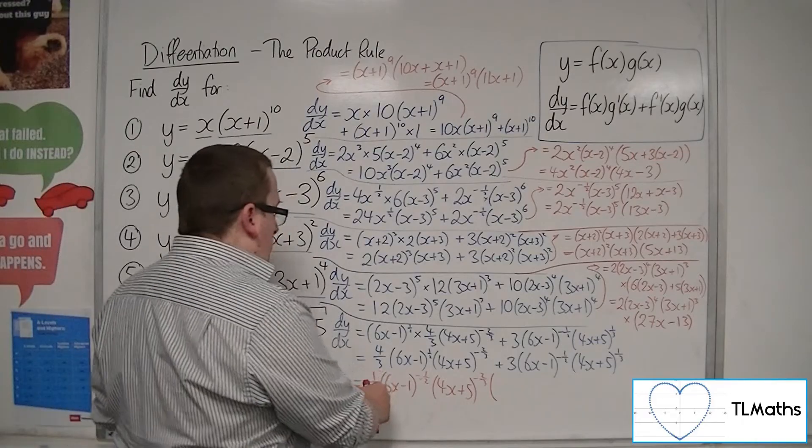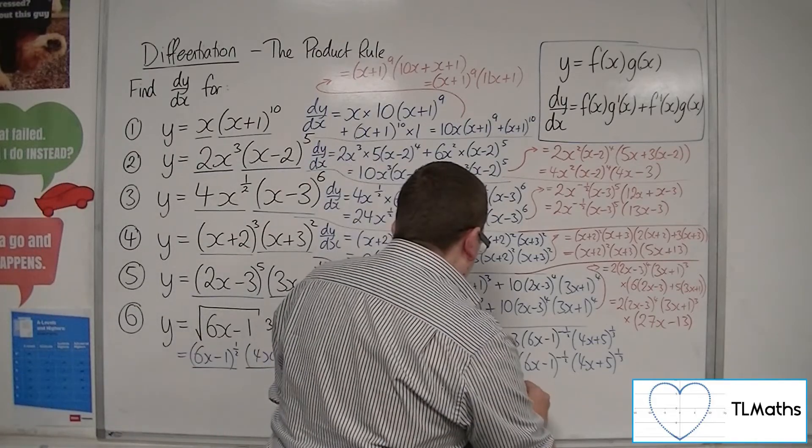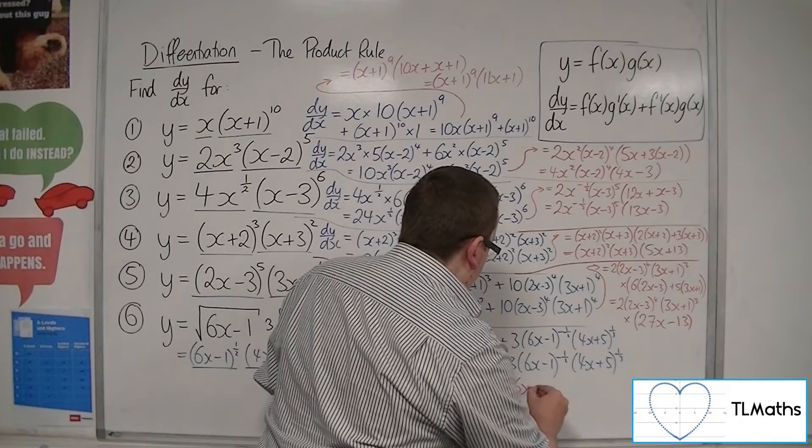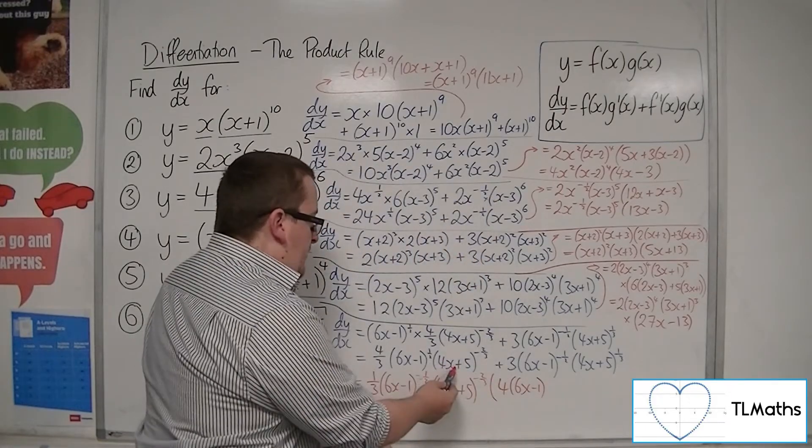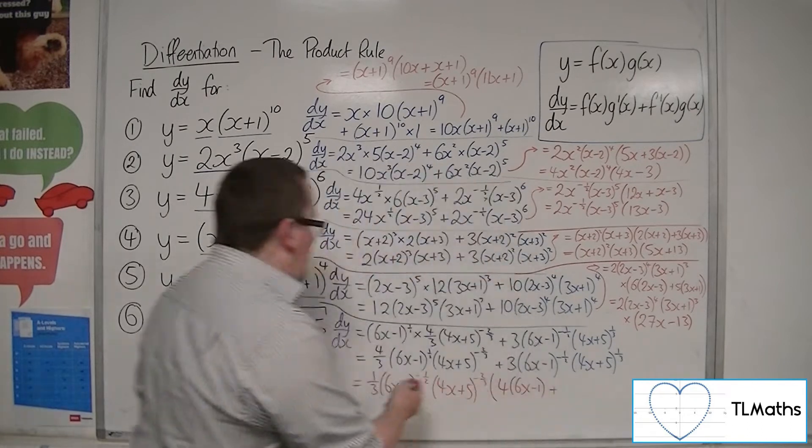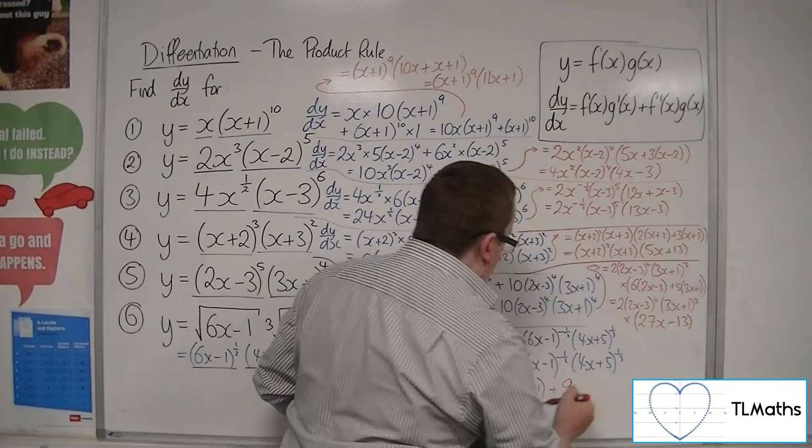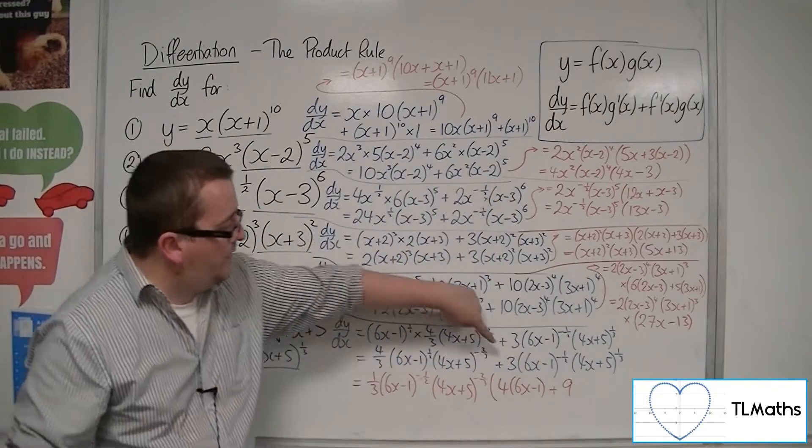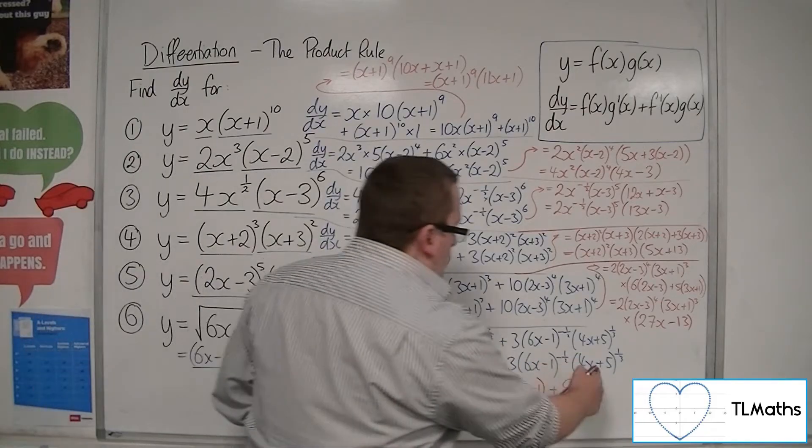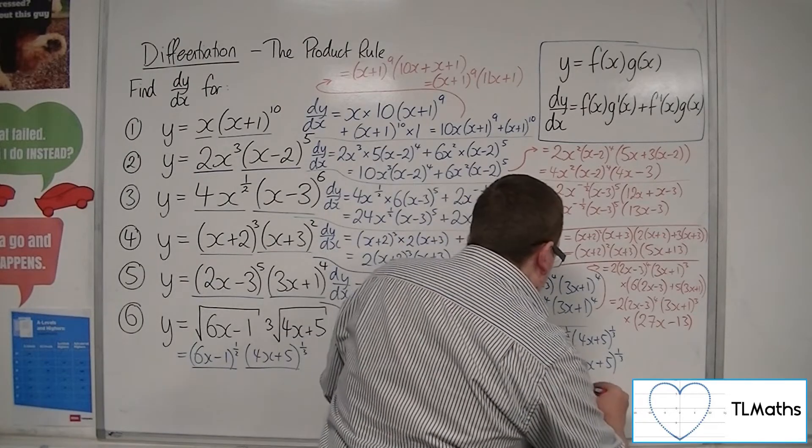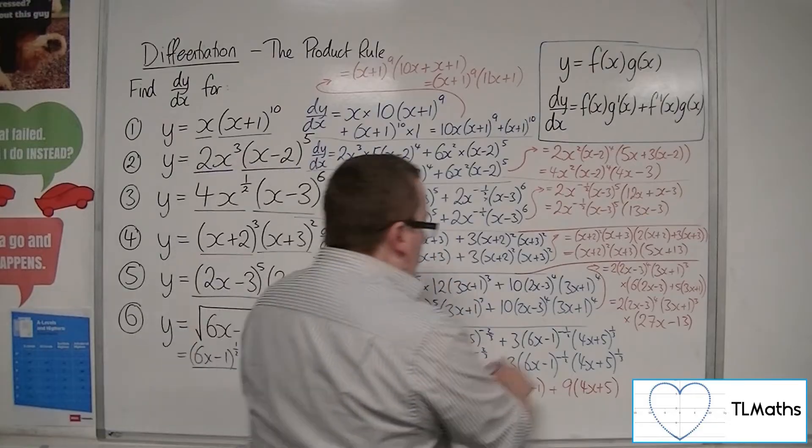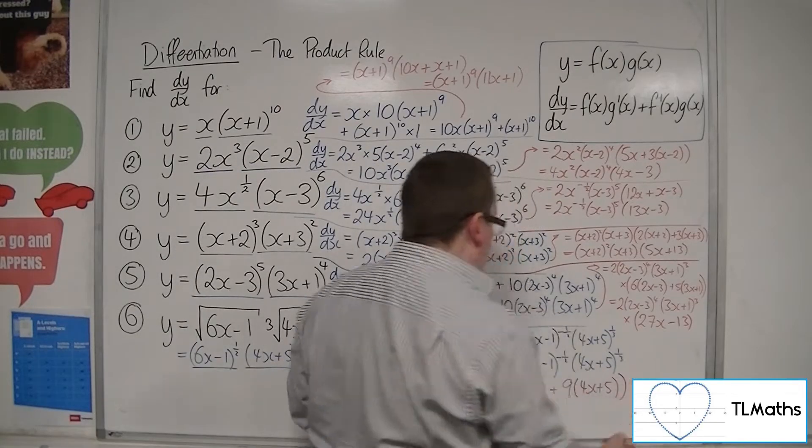What does that leave me with? Well, 1/3 times 4, I'm going to have (6x-1) from that. And I've dealt with that one, so I've got 4 lots of (6x-1) plus, now as I've pulled a third out, I'm going to have to have 9 here, because 1/3 times 9 will make the 3. The (6x-1)^(-1/2) is done with. Now the (4x+5), how many of those am I going to need? So (4x+5)^(-2/3) times by (4x+5) will get me to 1/3, so that's what I need.